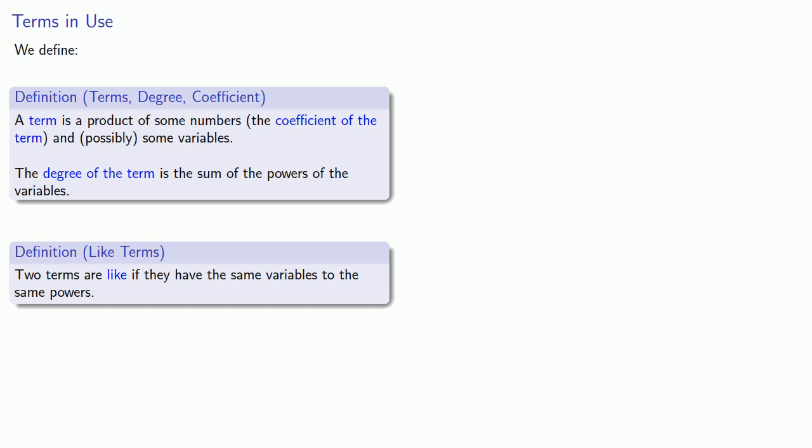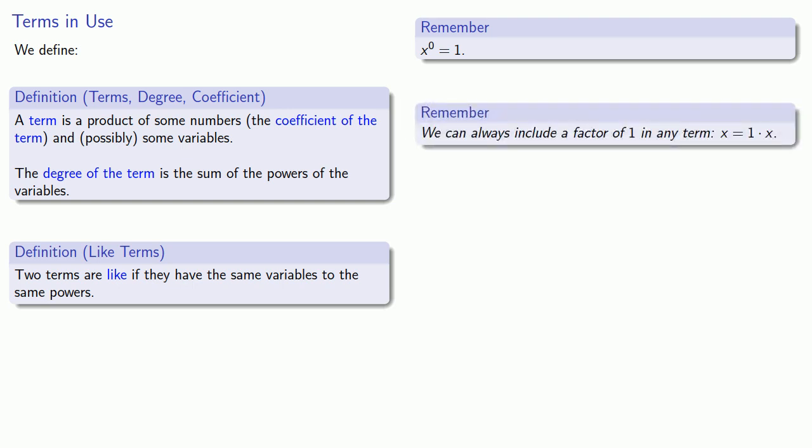It's useful to keep two important ideas in mind. First, x to the 0 is always equal to 1, provided x is not actually equal to 0. And we can always include a factor of 1 in any term. x is equal to 1 times x. Even if we don't have any variables at all in our term, there's an implied x to the 0 in every term.